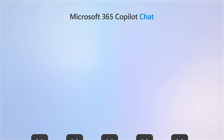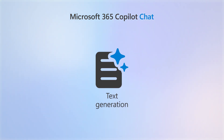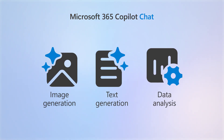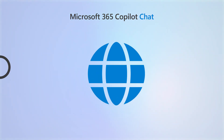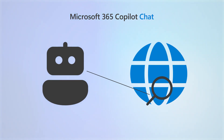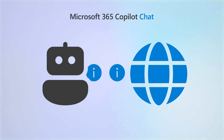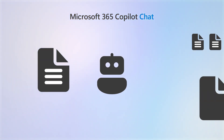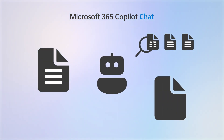With it, you can access features like text generation, image generation, and basic data analysis. Because it's grounded in the web, it can reason over the entire internet and quickly pull in relevant information. For example, you can get help with tasks like drafting emails or getting summaries of documents that you upload.